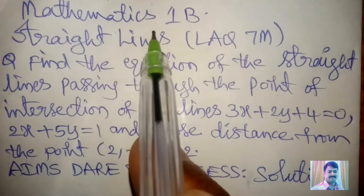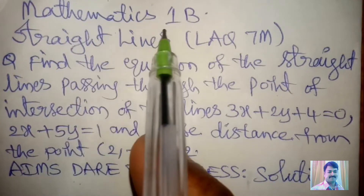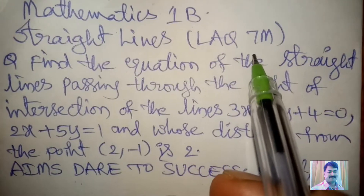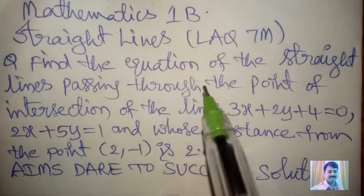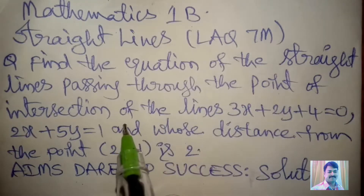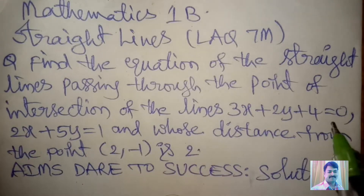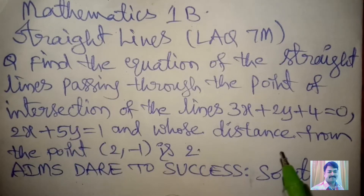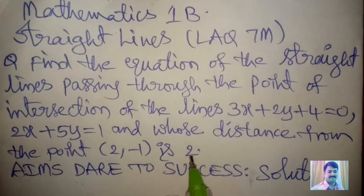Today I wanted to discuss with you a very important previous question from Mathematics 1B, Straight Lines Long Answer Question, 7 marks. Today our VIP question is: find the equation of the straight lines passing through the point of intersection of the lines 3x + 2y + 4 = 0, 2x + 5y = 1, and whose distance from the point (2, -1) is 2.